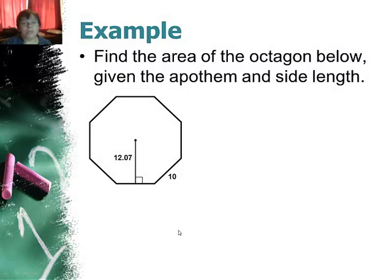So one last quick example. This is going back to the other example. We had side of 10 and we figured out the apothem was about 12.07. I just rounded here. And I just get the quick formula.